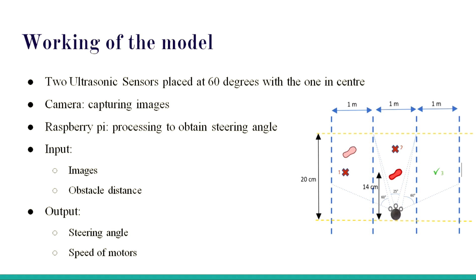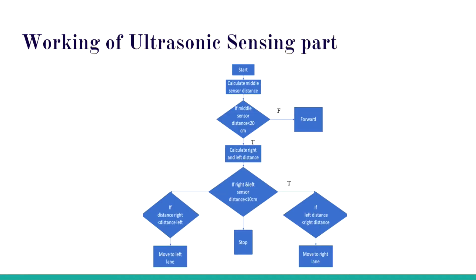Camera takes the input, Raspberry Pi does the processing. The input to the model is images and the obstacle distance from ultrasonic sensor. The output is the steering angle and speed of the motor. The motor direction and angle is controlled.